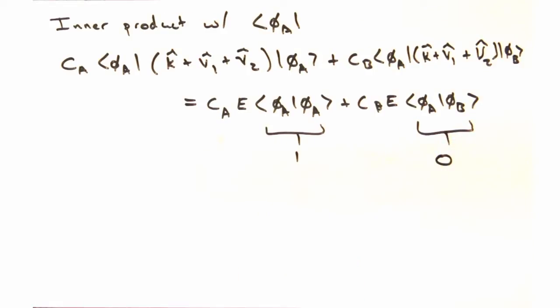let's create two separate equations called secular equations by taking the inner product with phi A and phi B. Okay, here's the first one. When there's an operator between the bra and the ket, we can't pull it out, but a scalar-like energy can be. Provided phi A was normalized, this term would go to 1. Hmm, this is pretty gross.